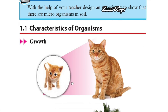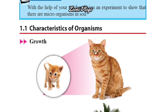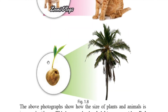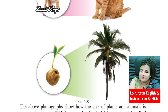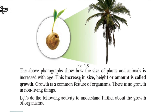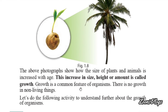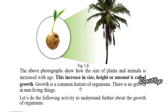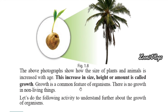Characteristics of organisms. Now we are going to talk about growth. You can see here a little kitten and a big large cat, and also a small coconut plant that has become a big coconut plant over time. These photographs show how the size of plants and animals increases with age. This increase in size, height or amount is called growth. Growth is a common feature of organisms. There is no growth in non-living things, as we discussed already.